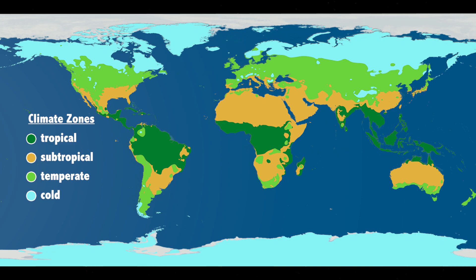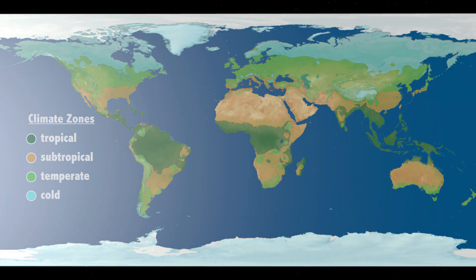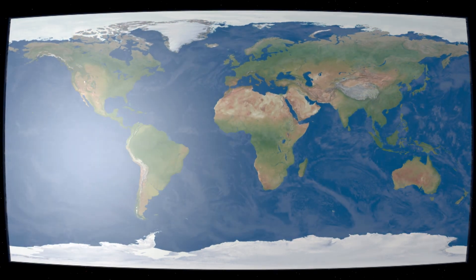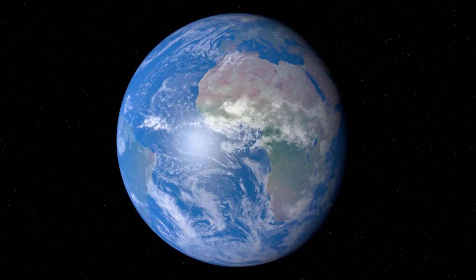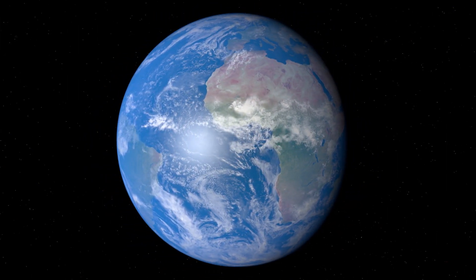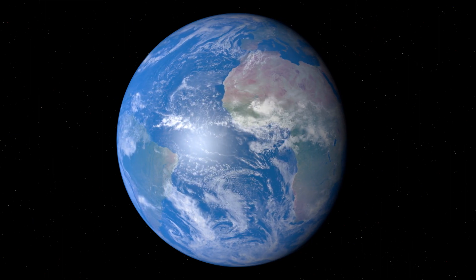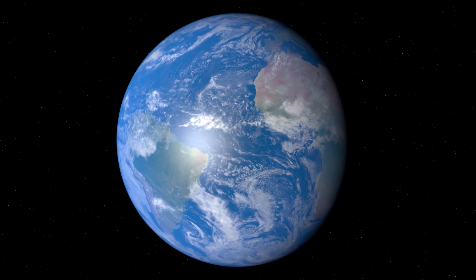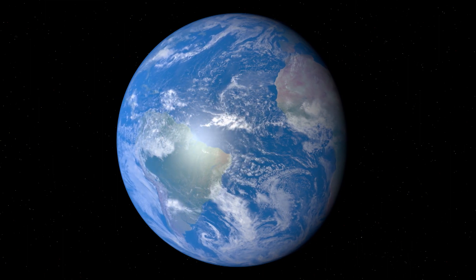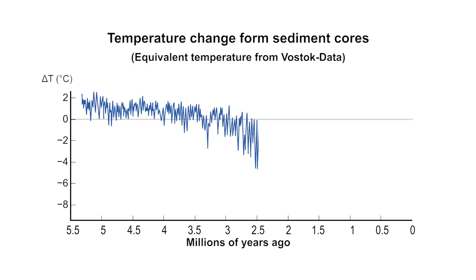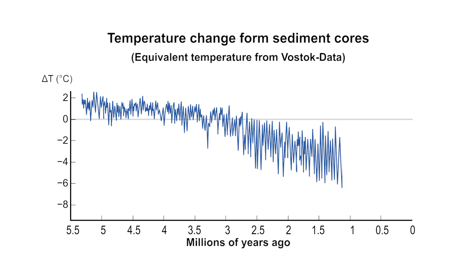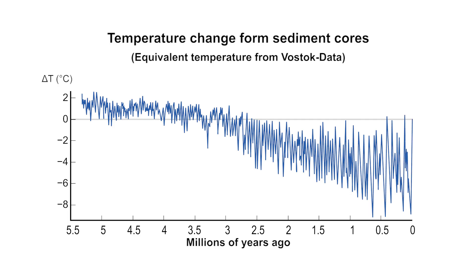The borders of the climate zones also shift with altitudes. The temperature differences of the various climate zones cause adjusting movements in the oceans and the atmosphere. These global ocean currents and wind systems create a comprehensive global climate system. Fluctuations in the average global temperatures of only a few degrees Celsius have led to ice ages and warm intervals in the past million years.